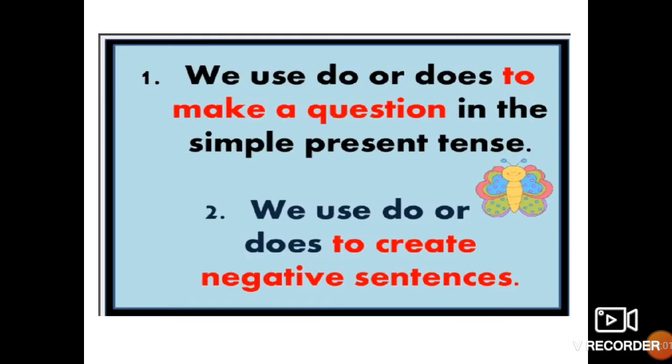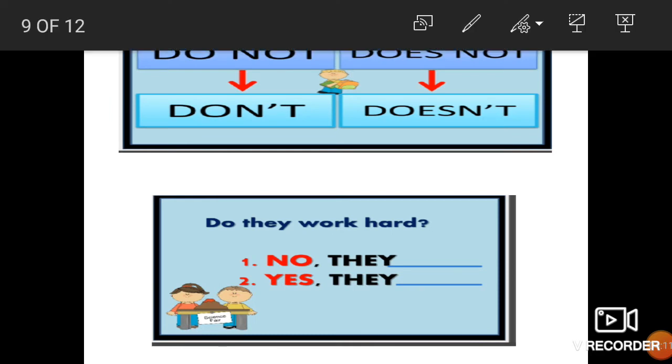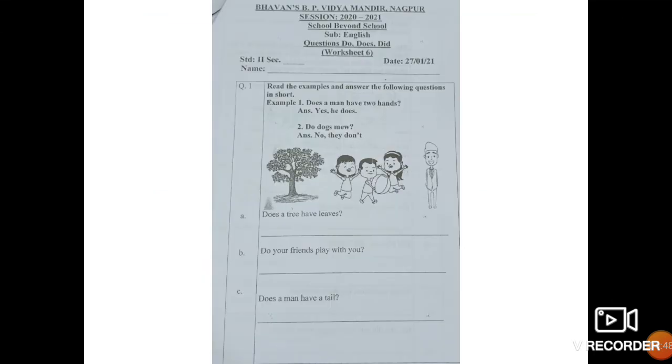So we use do and does to make a question in a simple present tense children. And we use do and does to create a negative sentence. Through example you will be able to understand. Short form of do not is don't. Short form of does not is doesn't. Do they work hard. No, they don't or they do not. Do they work hard. Yes, they do. When positive, do in the question, do in the answer.